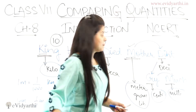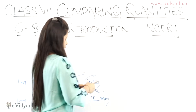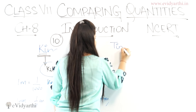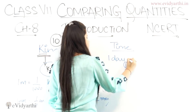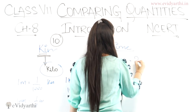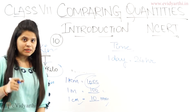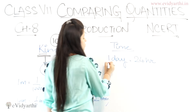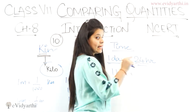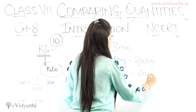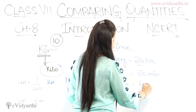Now let's move on. In addition to metric quantities, there are also normal quantities. One type is time-based. In time-based conversions: 1 day equals 24 hours. So if given 6 days, you convert to hours. Then 1 hour equals 60 minutes. Similarly, 1 minute equals 60 seconds.